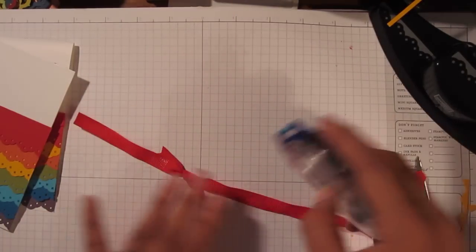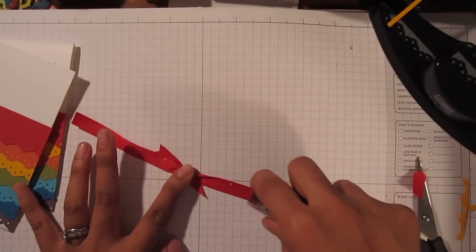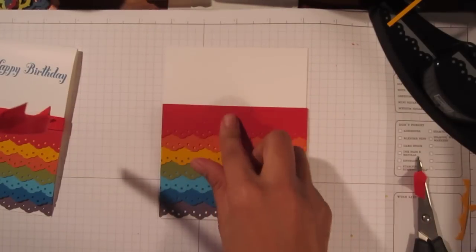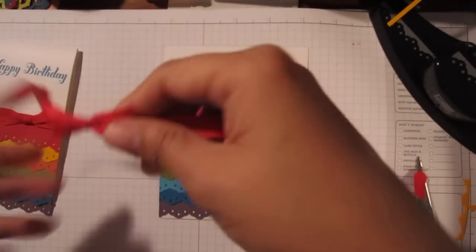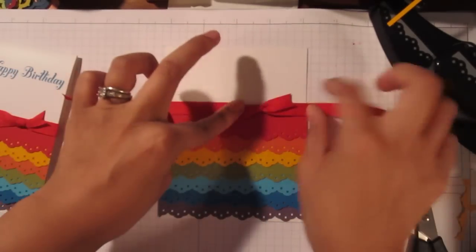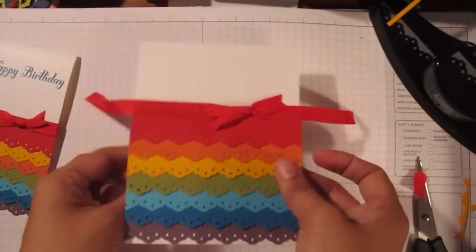And this is going to go directly on my card, right above my real red cardstock. And that's just going to add a little border between the white and the red and kind of ease that transition. Right there. See how nice that looks? Just kind of polishes it off a little.